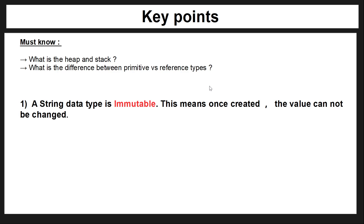Importantly, you need to know that a string data type is immutable. This means once created it cannot be changed. But how can this be? Because in your code you've seen string data types change into multiple values.